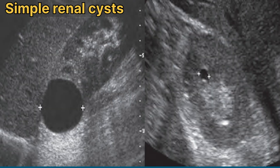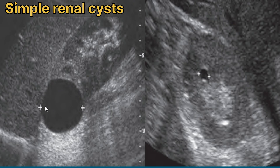Now we are going to discuss renal cysts. The accumulation of fluid within a thin membrane of the kidney is called a renal cyst. On ultrasound, cysts show characteristics including an anechoic lumen, well-defined back wall, acoustic enhancement deep to the lesion, and no variable wall thickness. This round structure demonstrates an anechoic lumen with acoustic enhancement and normal wall thickness — a simple cortical cyst at the upper pole of the kidney. A small cyst is also present with the same features.